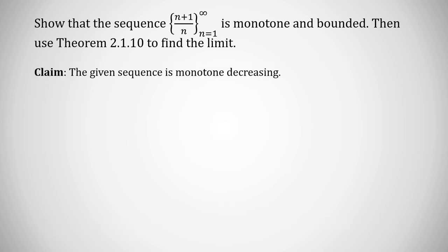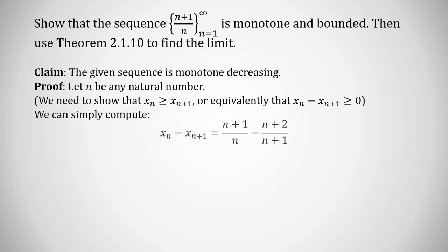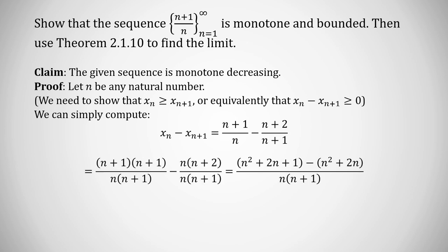Let's prove the sequence is monotone decreasing. Let n be any natural number. To show monotone decreasing, we need x_n ≥ x_{n+1}, or equivalently x_n - x_{n+1} ≥ 0, for every natural number. We compute: x_n - x_{n+1} = (n+1)/n - (n+2)/(n+1). After simplifying this difference of fractions, we get 1/(n(n+1)), which is strictly greater than 0. Since x_n - x_{n+1} ≥ 0 for all n, the sequence is monotone decreasing.